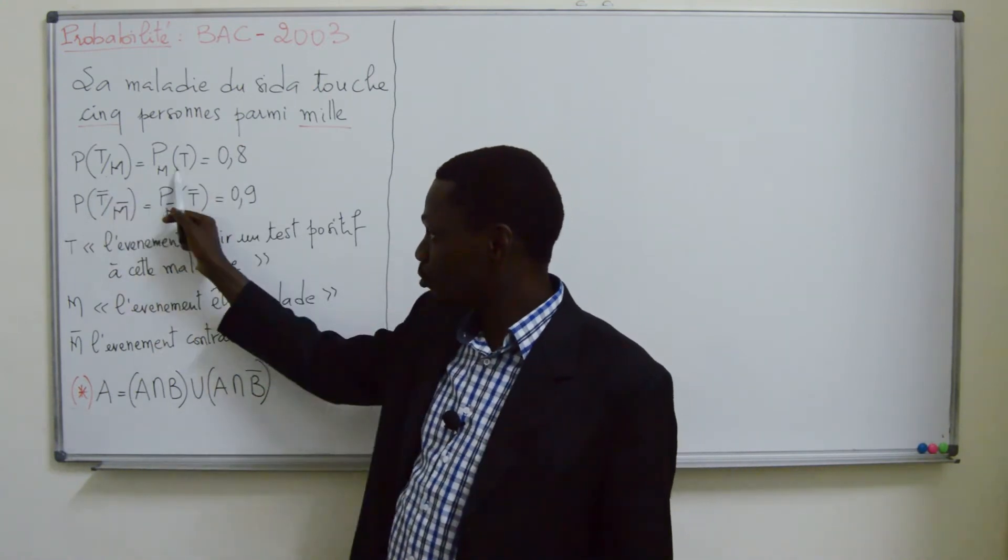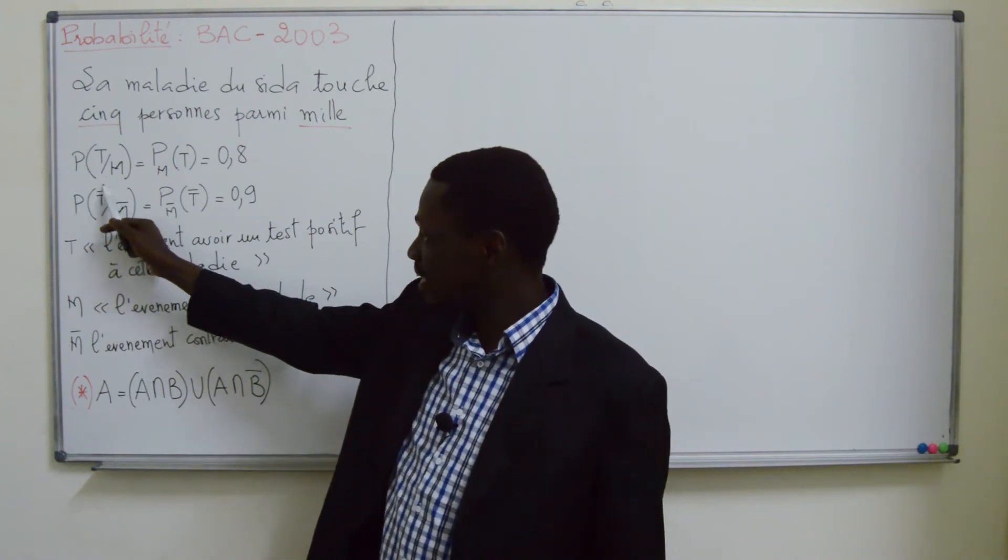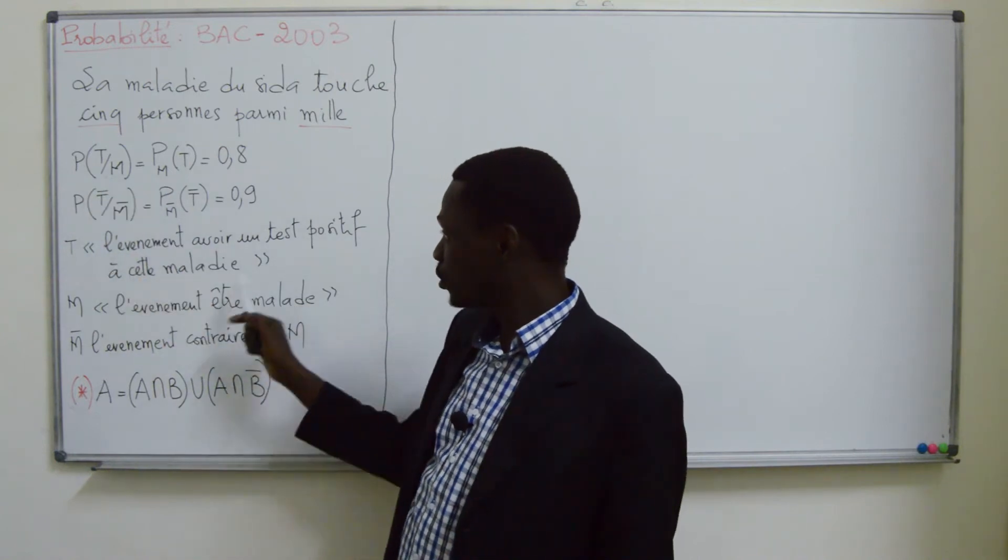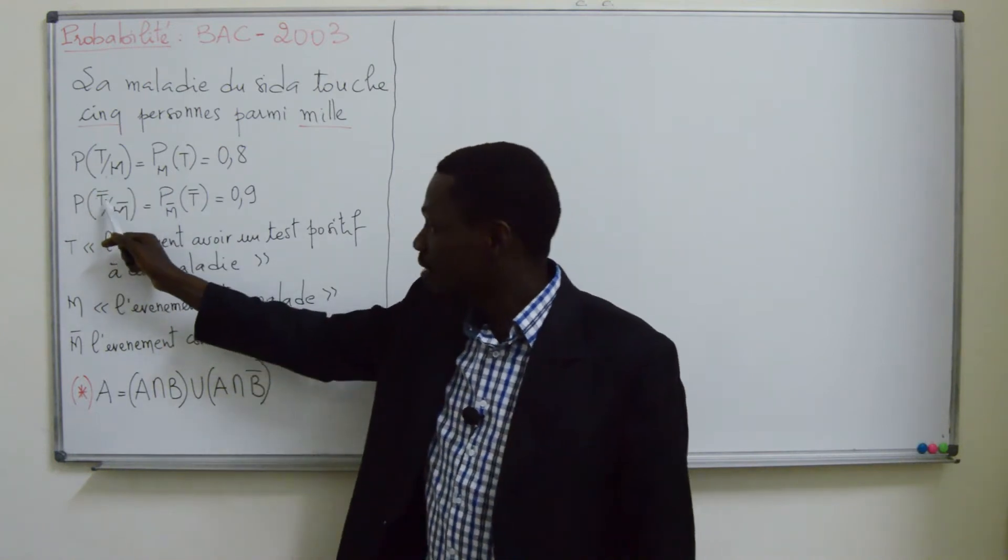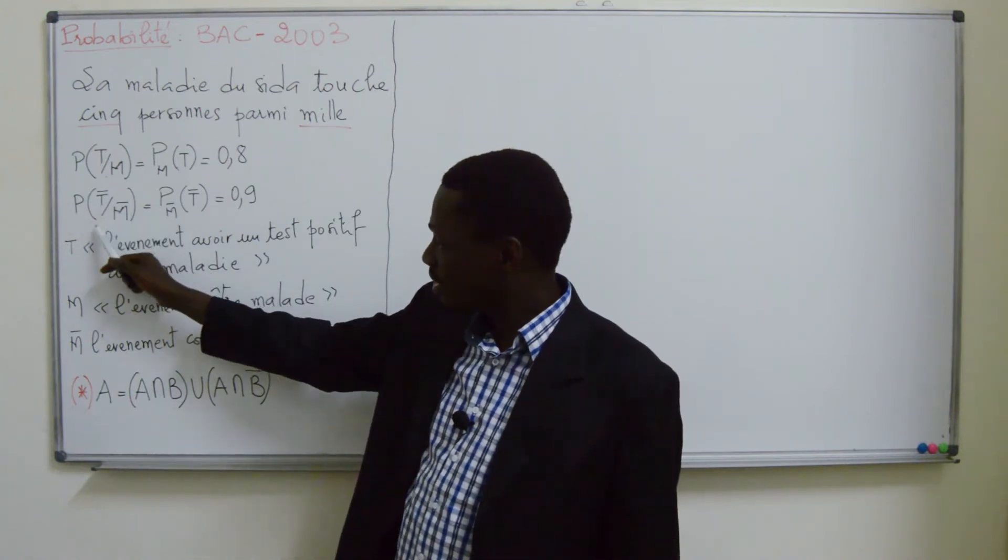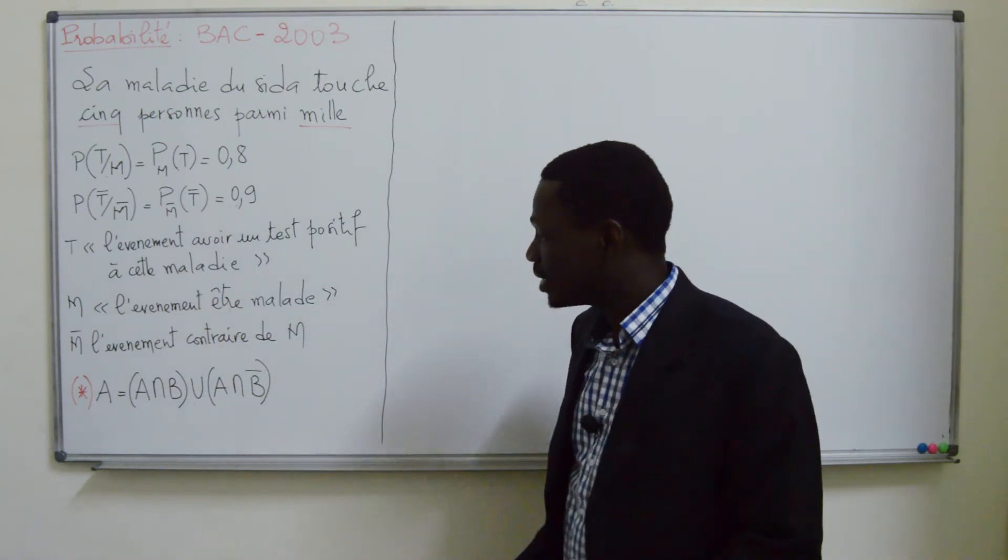Ces deux écritures se valent. La probabilité pour qu'un individu ait un test négatif - donc si T c'est l'événement d'avoir un test positif, donc T barre c'est l'événement d'avoir un test négatif. La probabilité d'avoir un test négatif, sachant qu'on n'est pas malade, c'est 0,9.